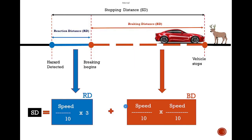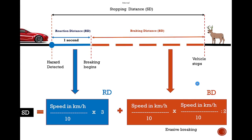Let's cover one more concept: we've covered normal braking with 1-second thinking time, but what about evasive or emergency braking? For example, a cyclist suddenly enters the road or an animal jumps onto it. There is a slight change in the formula: the reaction distance stays the same, but for evasive braking the braking distance is divided by 2 — it's half the normal braking distance.